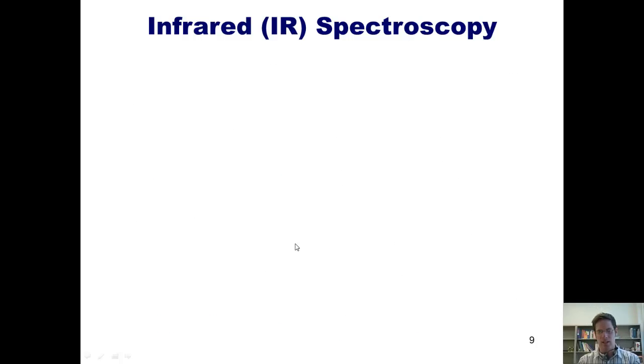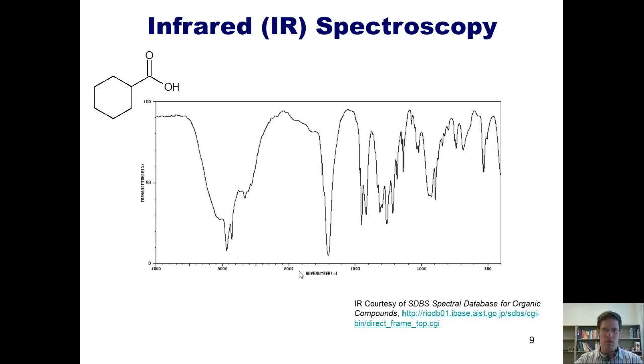One functional group that deserves attention is the carboxylic acid, which has both a carbonyl and an OH. However, in carboxylic acid, these two bonds are grouped together, or bonded together, instead of being separated, as in the example I showed on the previous slide. How does that make the IR appear?